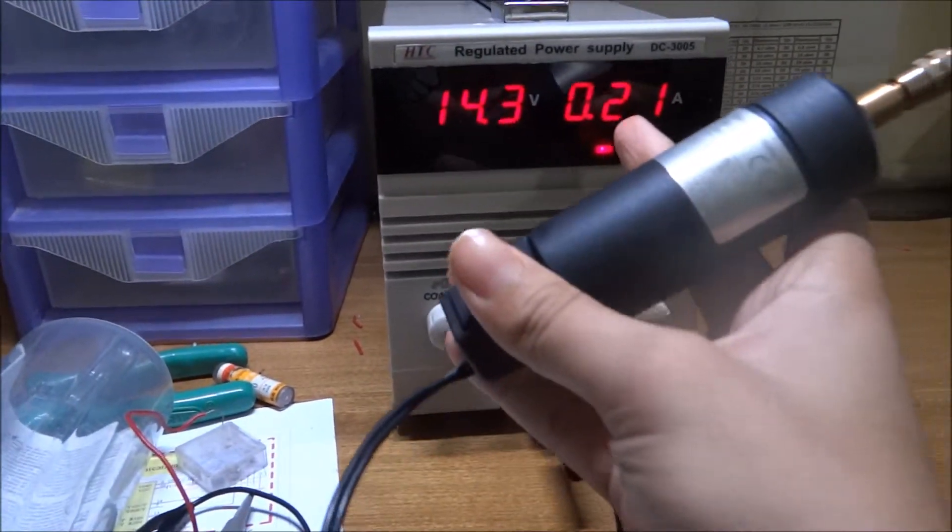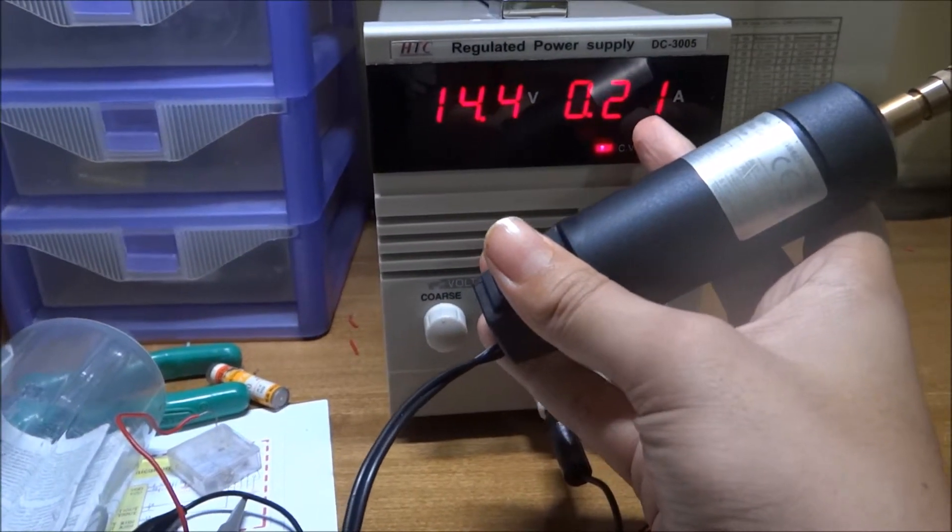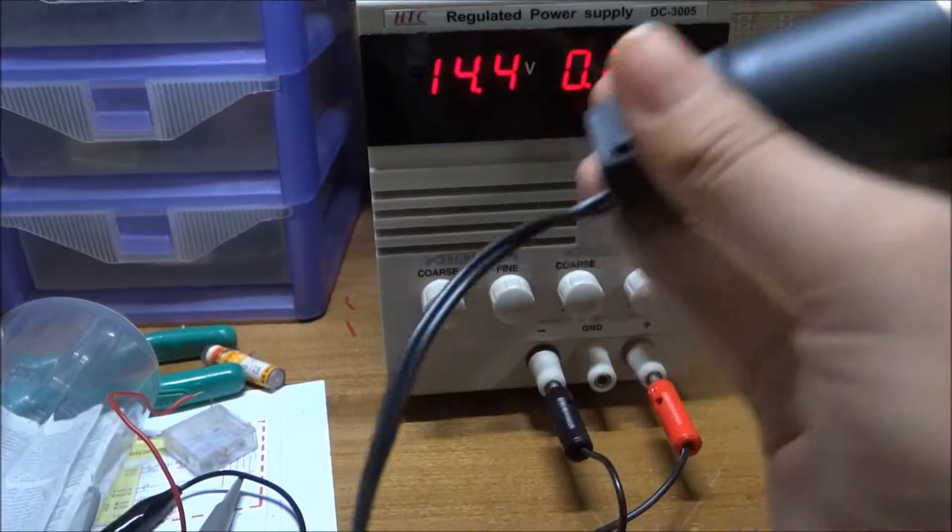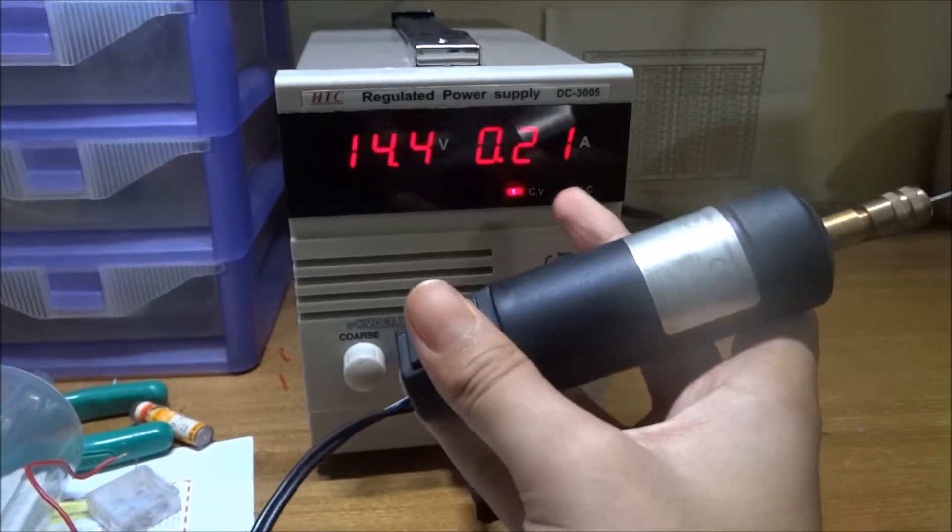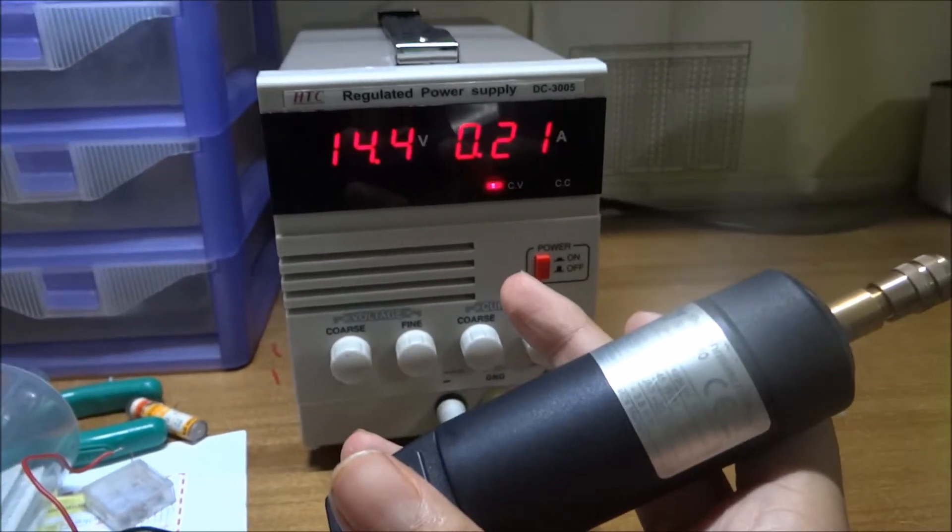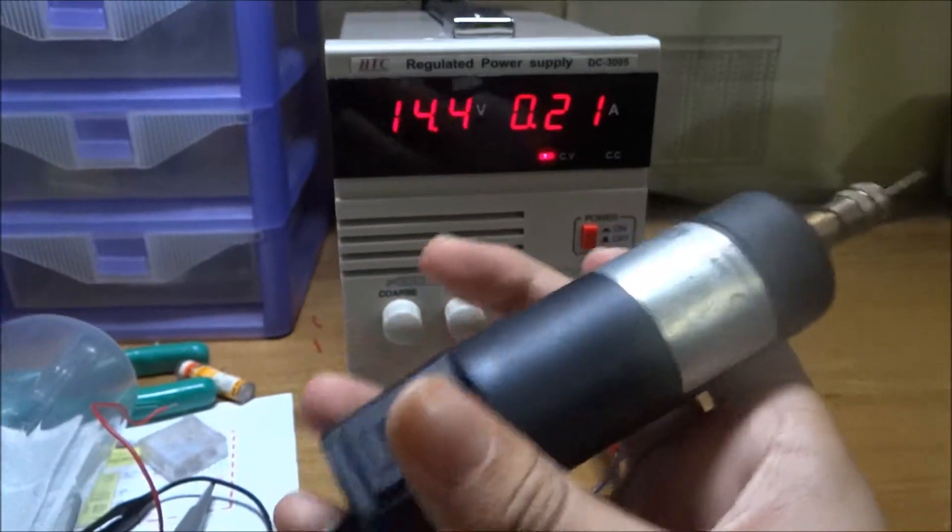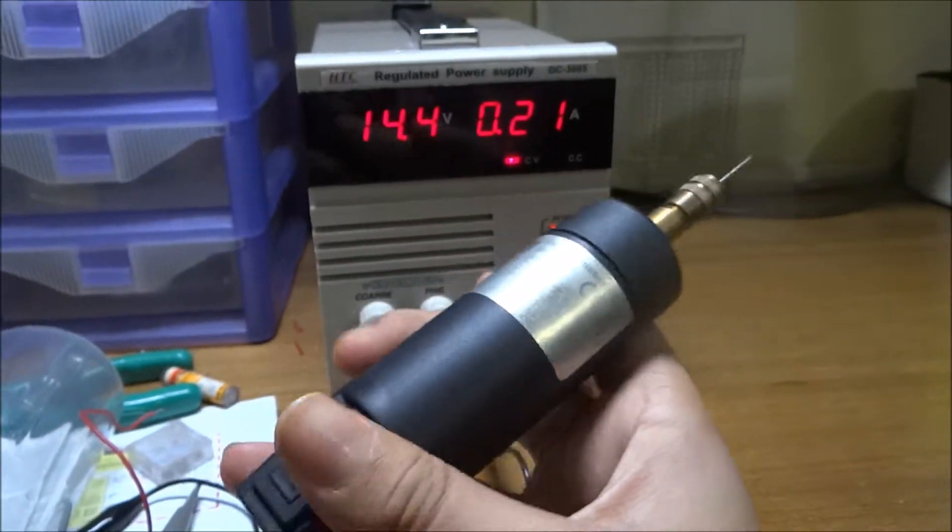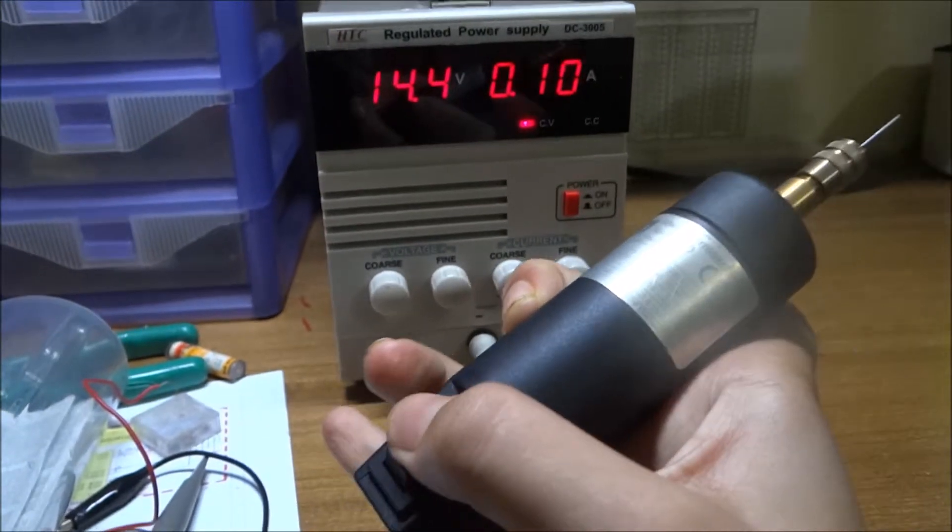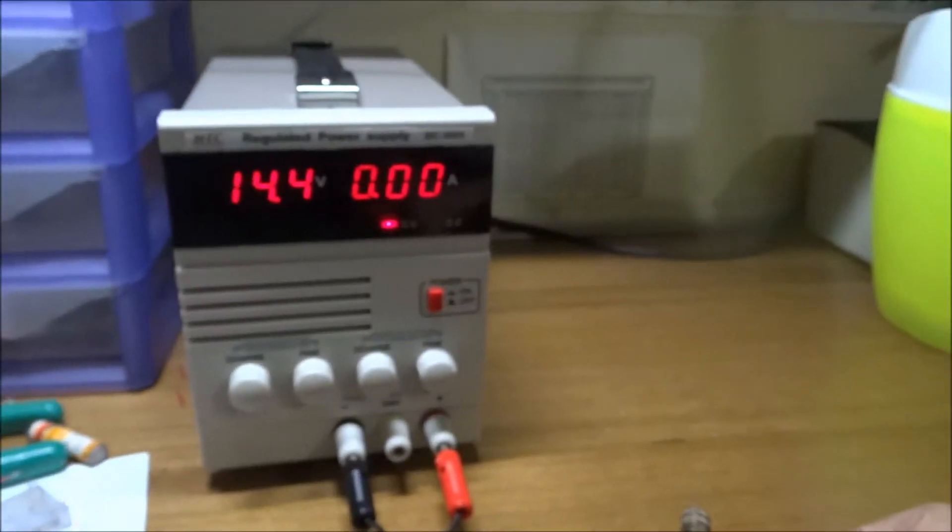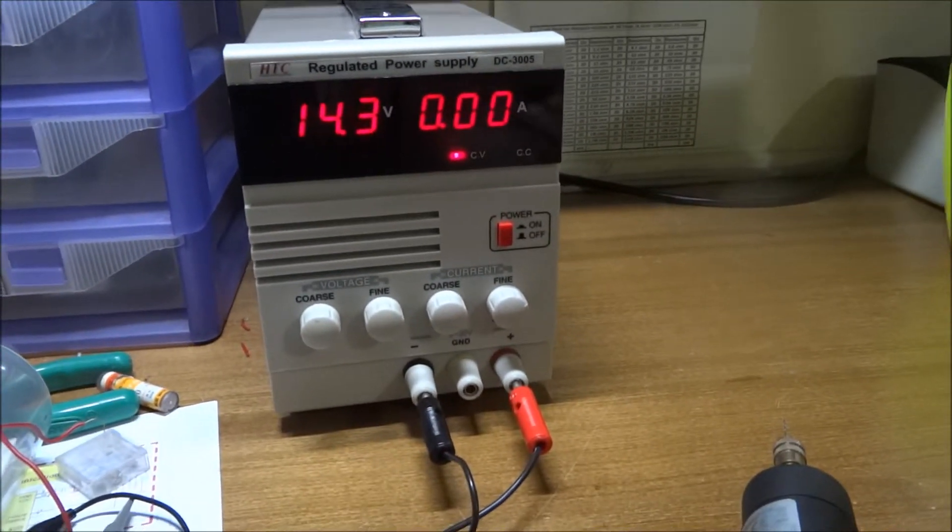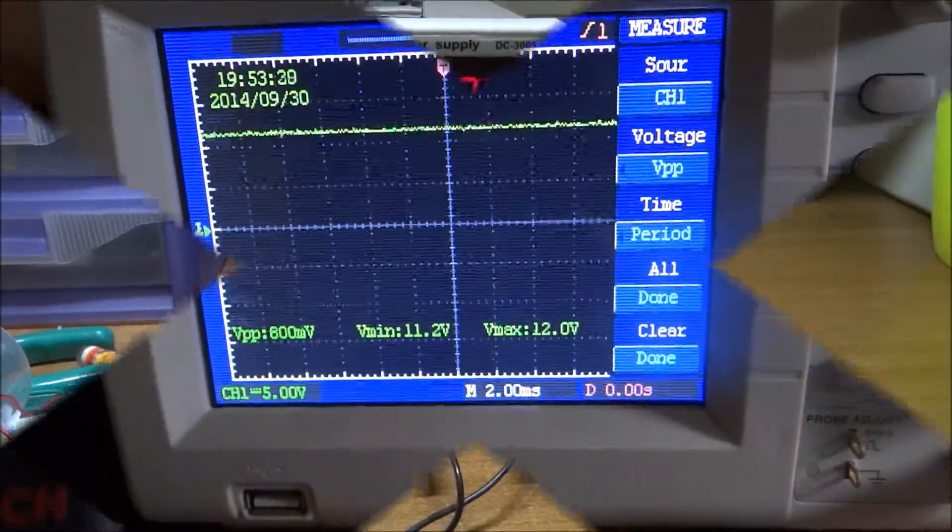This current indicator you see here actually shows the current that is being drawn by this motor at the moment. Now it is around 210mA. So that is the equivalent of current that is being drawn by this motor. It's a very useful feature to have and you can tell how much current is being drawn by your circuit at which moment.